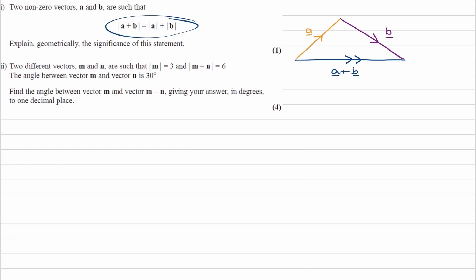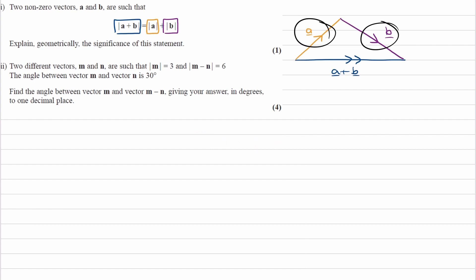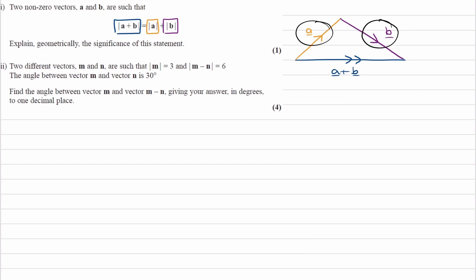So what is this saying? This is saying that the magnitude of a plus b — the length of the blue vector — is equal to the magnitude of a, the length of the orange line, plus the length of the purple line. We can see from this shape that that is not the case. The orange length plus the purple length, those two lines added up, do not give this blue line in length. The magnitude of a plus the magnitude of b will be bigger than the magnitude of a plus b.